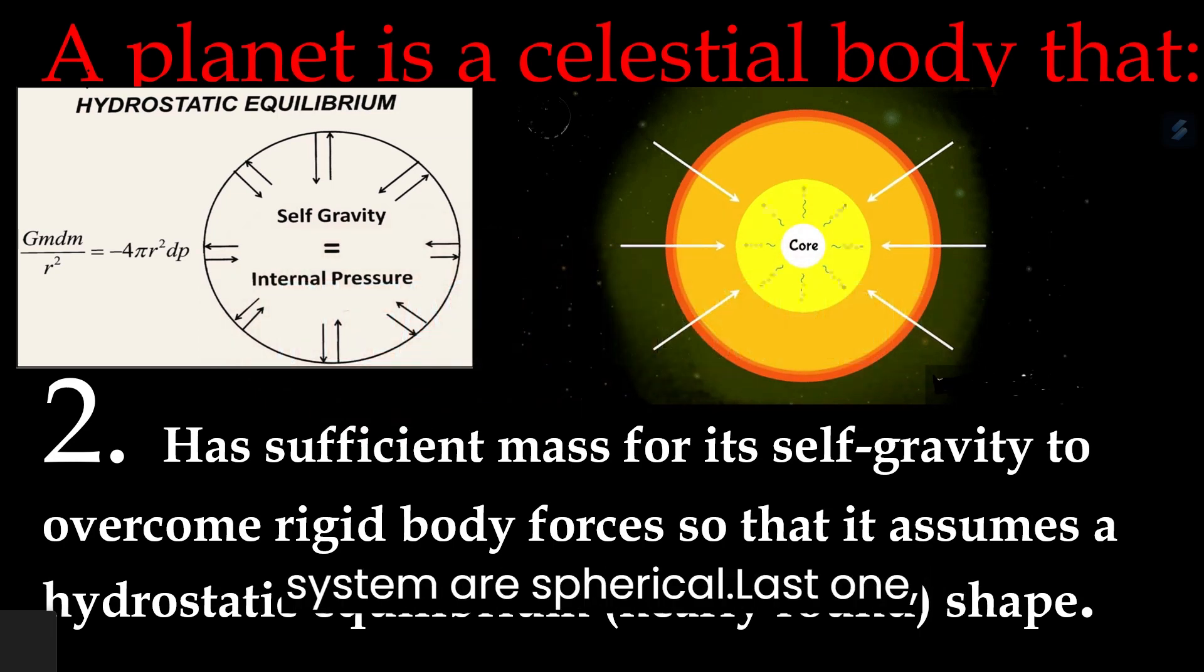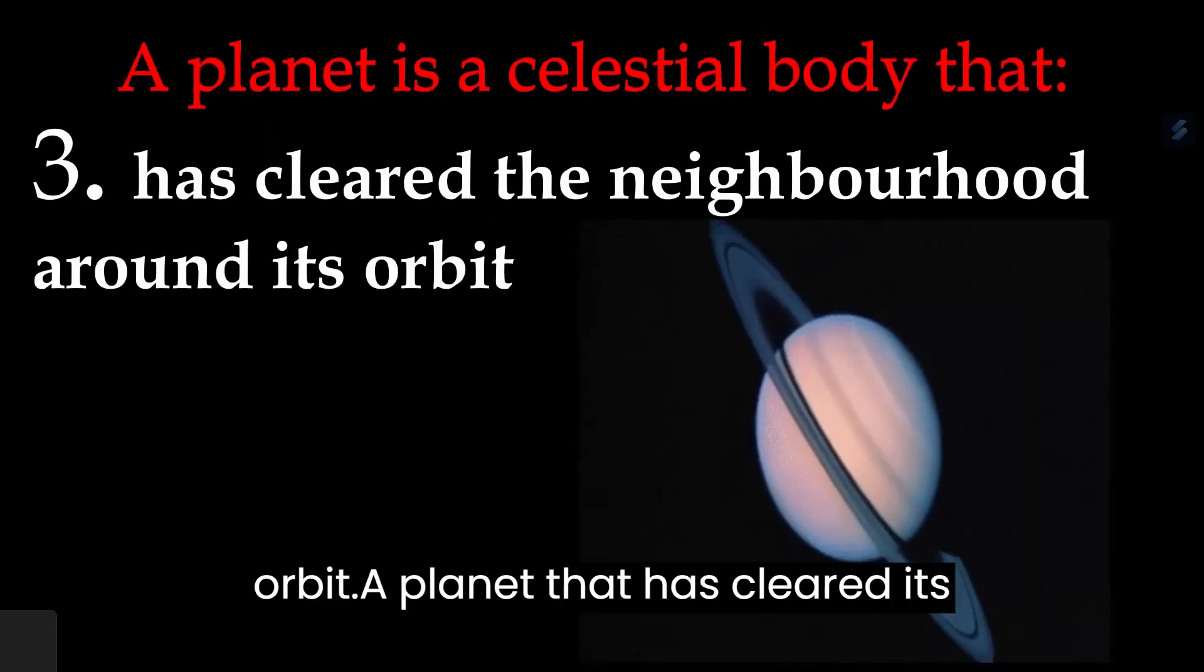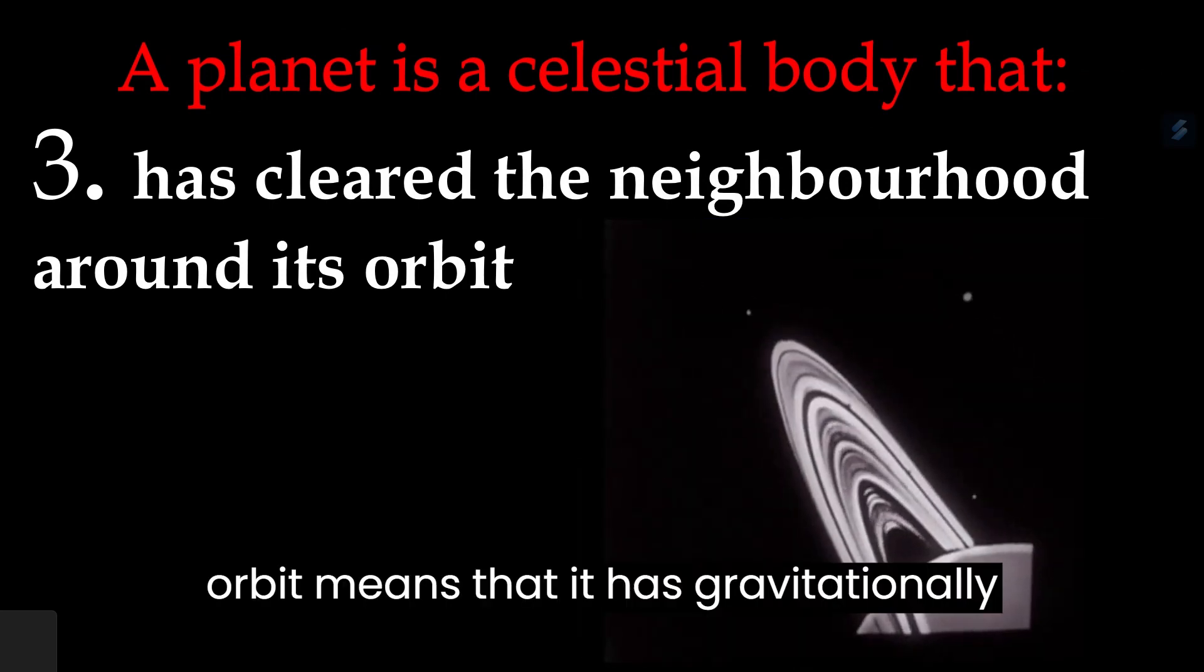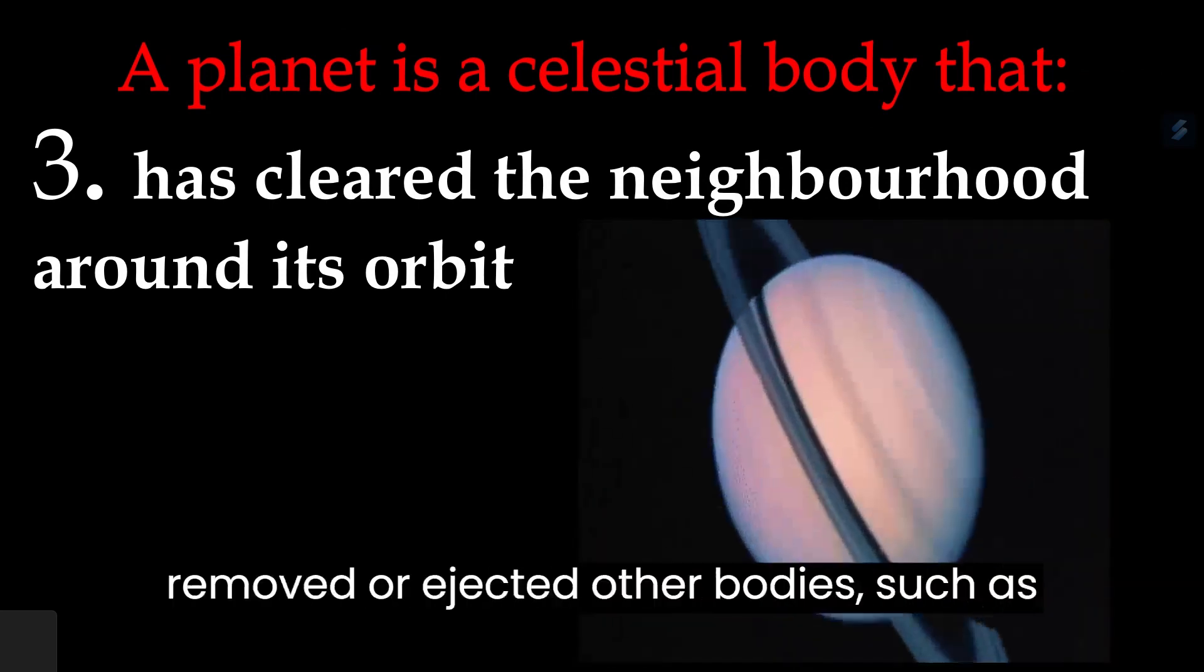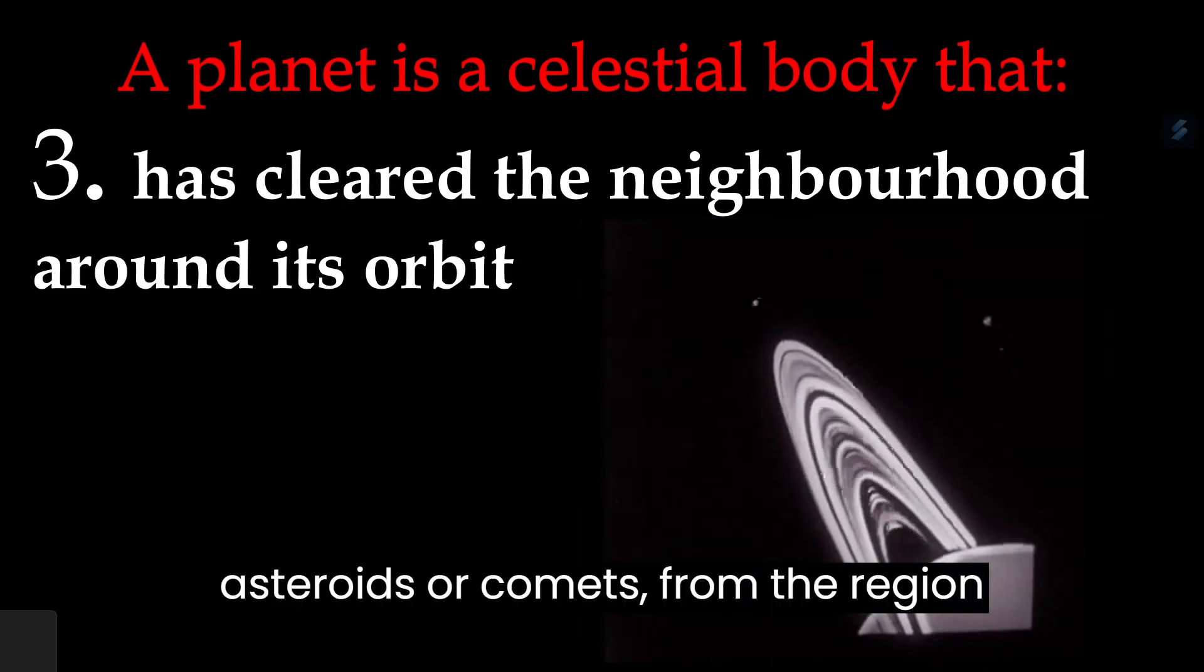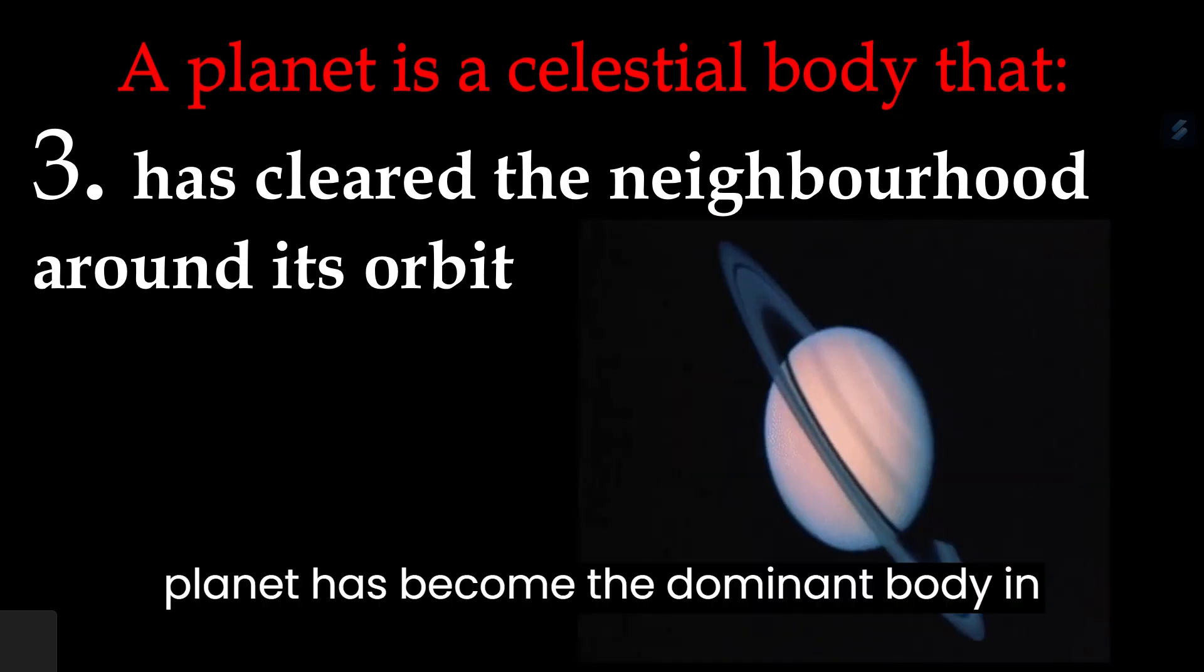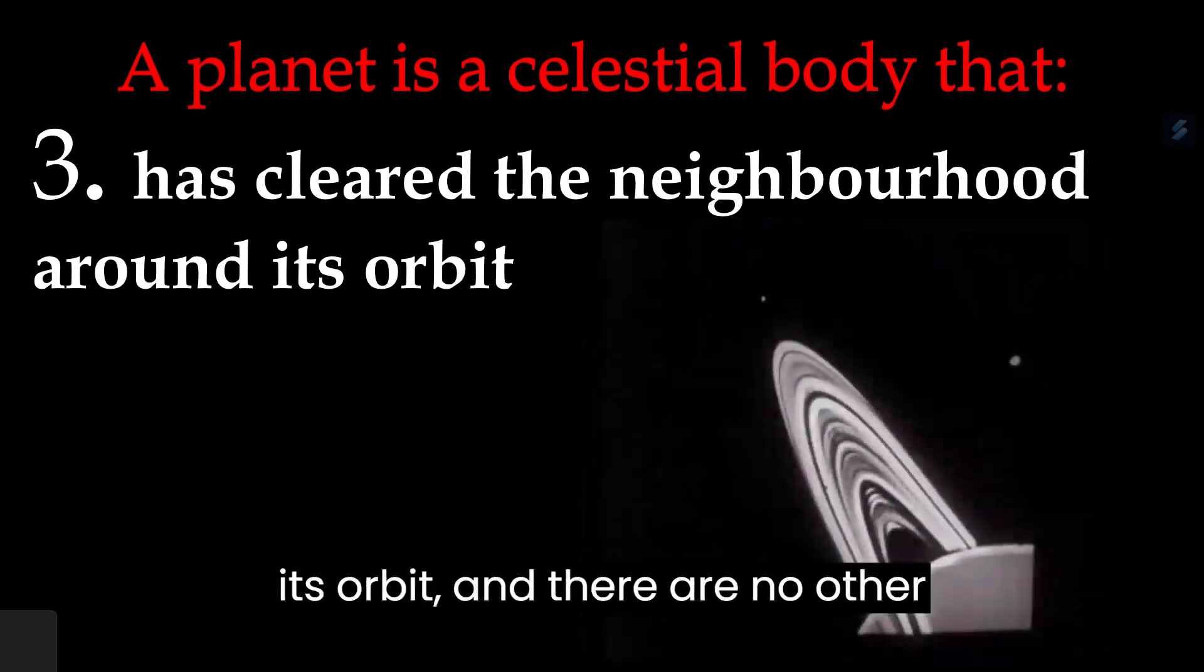Last one: a planet is a celestial body that has cleared the neighborhood around its orbit. A planet that has cleared its orbit means that it has gravitationally removed or ejected other bodies such as asteroids or comets from the region around its orbit. This means that the planet has become the dominant body in its orbit and there are no other significant objects sharing its orbital space.